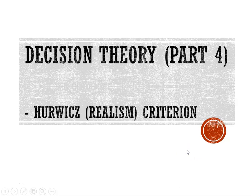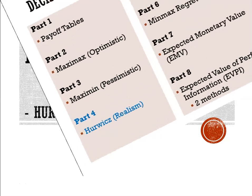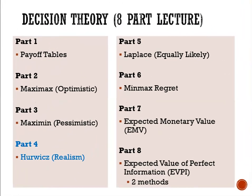Welcome back. We are at part 4 of our 8-part lecture on Decision Theory. We are looking at Hurwitz, otherwise known as the Realism Criterion. In part 1 we looked at interpreting payoff tables. Part 2 looked at maximax and part 3 looked at maximin. Now we are at part 4.